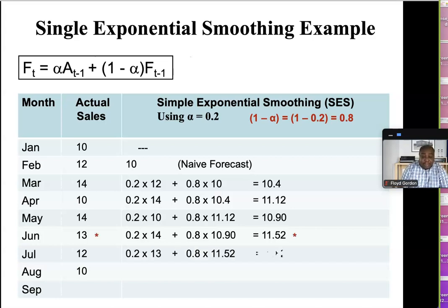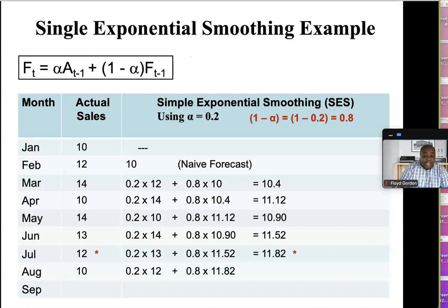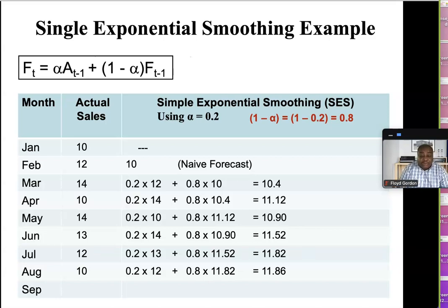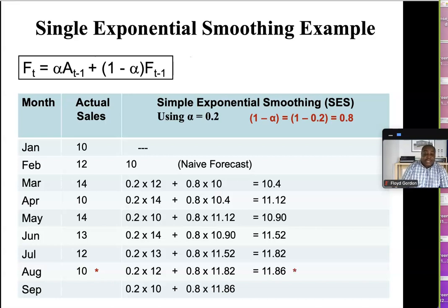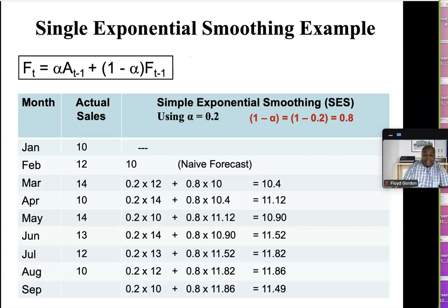Moving on to July: 0.2 times 13 plus 0.8 times 11.52 gives us 11.82. For August: 0.2 times the previous actual 12, plus 0.8 times 11.82, works out to 11.86. Then for September: 0.2 times the previous actual 10, plus 0.8 times the previous forecast 11.86, works out to 11.49. These are our forecasts for February up to September.